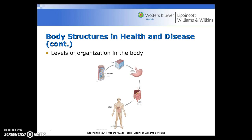These definitions relate to the levels of organization in the body, starting with the cell and the structures inside the cell such as the chromosome and nucleus. Increasing in complexity, tissues are formed from cells, organs are made of tissues — for example, the stomach — body systems are made of multiple organs, and finally the body as a whole.